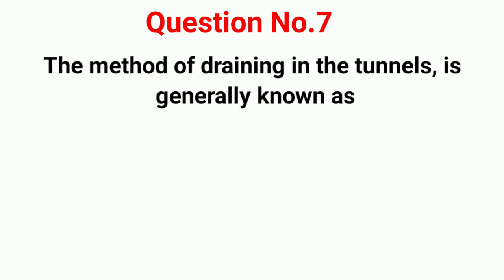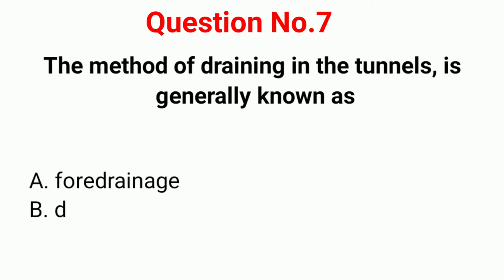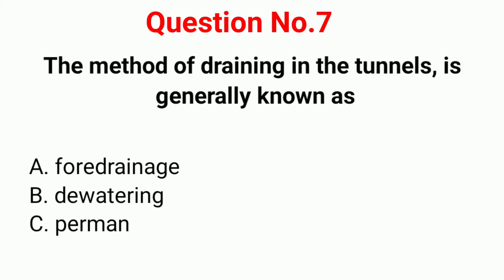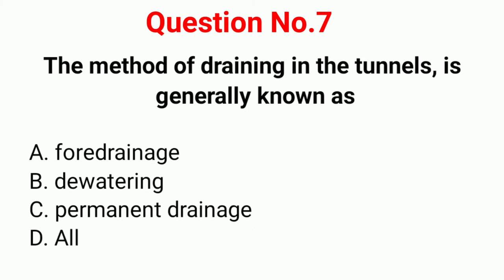Question number 7. The method of draining in the tunnels is generally known as: Option A: For drainage. Option B: Dewatering. Option C: Permanent drainage. Option D: All of the above.